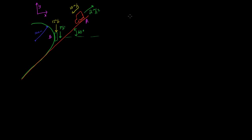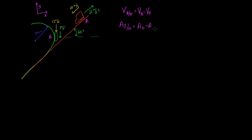This question is asking us to figure out the velocity of B with respect to A and the acceleration of B with respect to A. We know that the velocity of B with respect to A is the velocity of B minus the velocity of A, and the acceleration is the acceleration of B minus the acceleration of A. So we need to figure out all four of these variables.